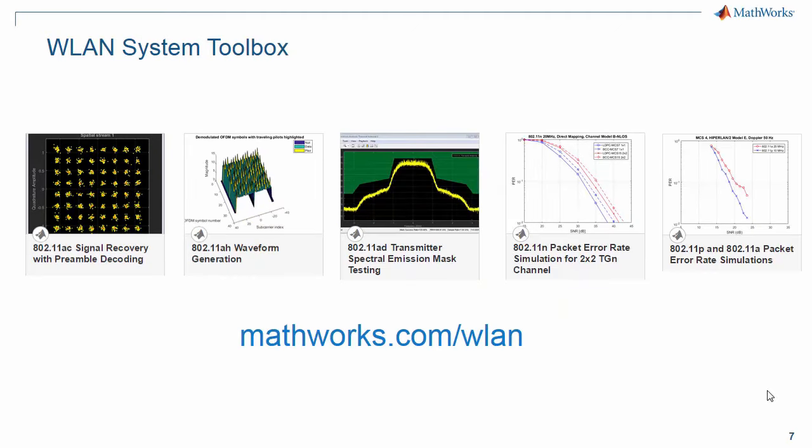Wireless LAN system toolbox provides MATLAB functions for the design, modeling, simulation, analysis, and testing of all these wireless LAN standards. Examples provided in the toolbox help you get started quickly. They include waveform generation, transmitter and receiver measurements such as spectral emission masks and EVM, end-to-end link modeling with fading channel models and packet recovery. To learn more about wireless LAN system toolbox, check out its product page at mathworks.com/wireless-LAN, and contact us to obtain an evaluation copy so you can try out its functionality.